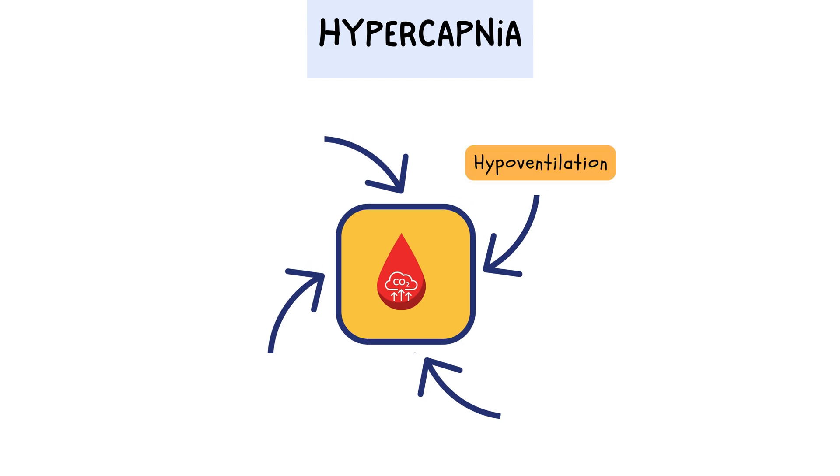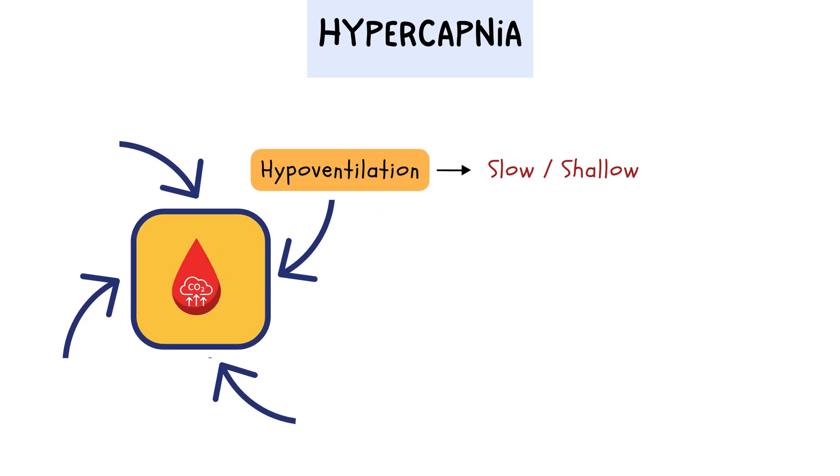The most common culprit is hypoventilation, which, in simple terms, means breathing too slowly or too shallowly. Think of it like a chimney that's not drawing properly. The smoke, or in this case, the CO2, can't escape efficiently. This hypoventilation can be caused by a variety of underlying conditions.